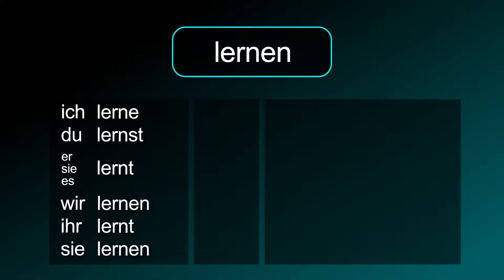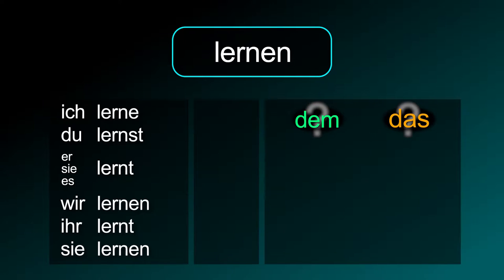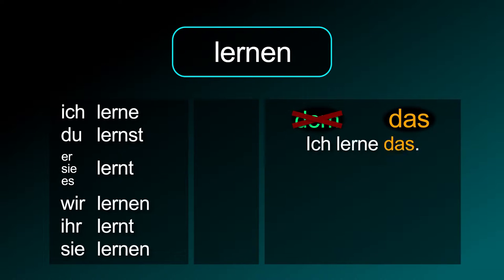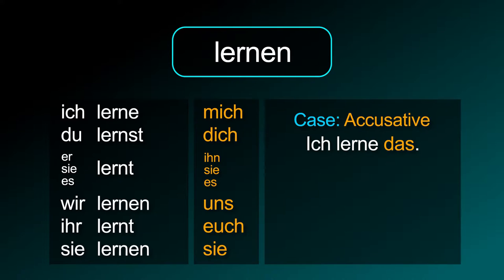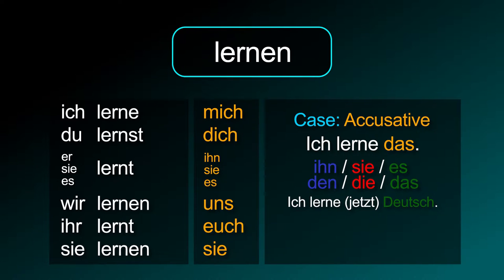Lernen conjugation: ich lerne, du lernst, er/sie/es lernt, wir lernen, ihr lernt, sie lernen. This verb needs the accusative case, so the correct way to say 'I learn that' is ich lerne das. I'm learning German now is ich lerne jetzt Deutsch — its noun is neuter.